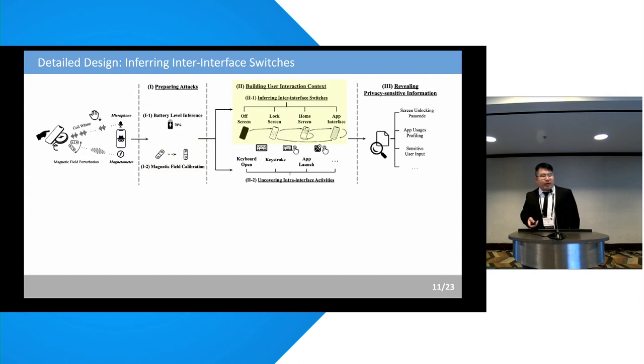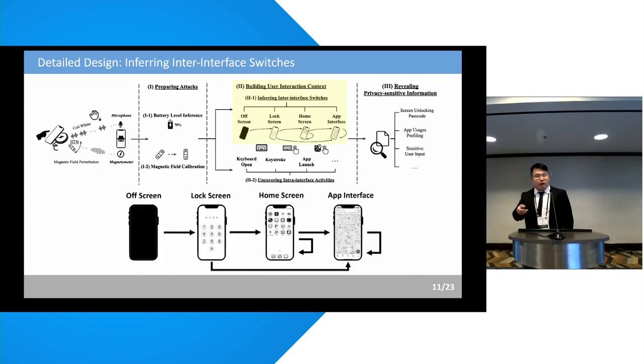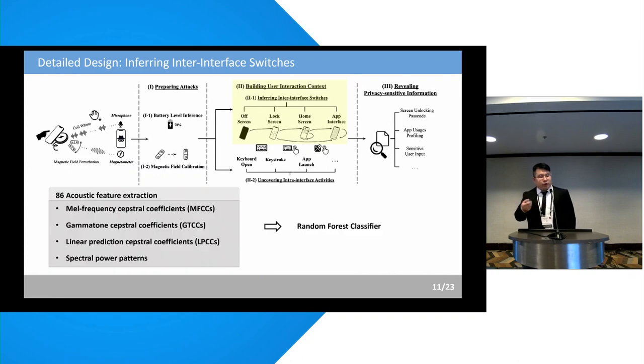After preparing the attack, WISERS then builds the user interaction context by first inferring inter-interface switches across four common smartphone interfaces, including the off-screen interface, lock screen, home screen, and app interfaces. Specifically, we extract the 4886 acoustic features from the coil whine, including MFCCs, GDCCs, AOPCCs, and spectral power patterns, to train a random forest classifier to infer the interface switch across different interfaces.